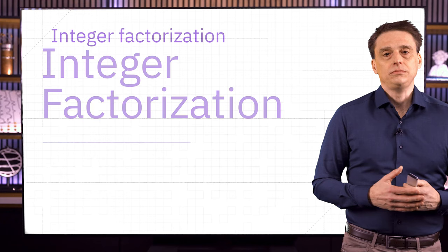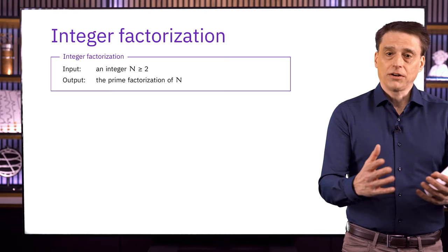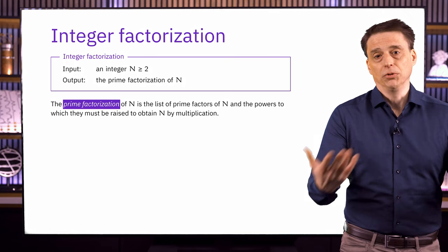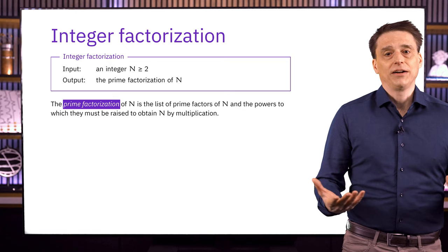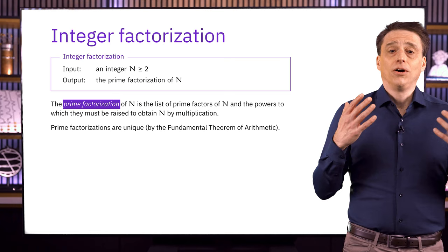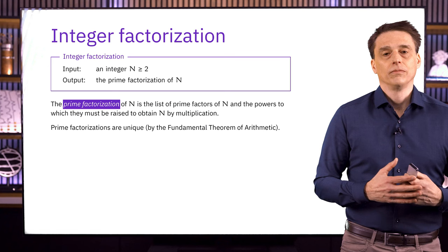The problem statement is very simple. The input is an integer n that's at least two, and the output is the prime factorization of n — a list of the prime number factors of n, together with the powers that these prime numbers must be raised to in order to get n by multiplying them all together. Prime factorizations are always unique for every choice of n — that fact is called the fundamental theorem of arithmetic. As a very simple example, here's the prime factorization of the number 12: it's 2 to the power 2 times 3 to the power 1.